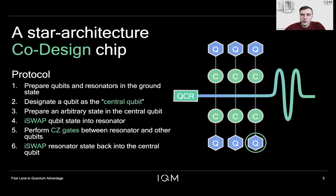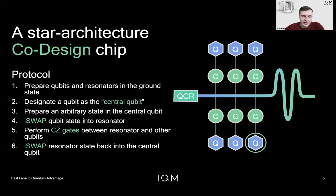We can then perform controlled-Z gates — CZ gates — between the resonator and all the other qubits, again using the couplers. Once done, we either reset the resonator using the QCR, or send the state back into the central qubit using another iSWAP gate. We can then designate another qubit to be the central qubit and repeat the procedure. In this protocol, the iSWAP gate is used to transport the qubit state around the chip, while the CZ gate is the computational two-qubit gate used in our algorithm.